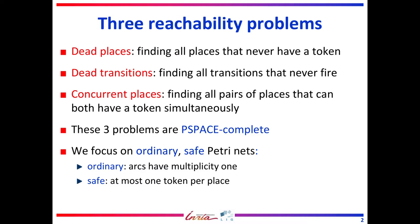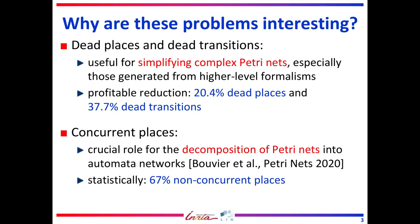These three problems are PSPACE complete. In this work, we focus on ordinary safe PetriNets, meaning that all arcs have multiplicity one and that all places have at most one token per place. The dead places and dead transitions problems are useful for simplifying complex PetriNets that have been derived from high-level formalisms.